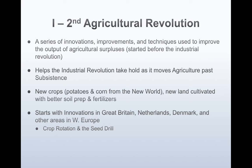New crops — potatoes and corn from the new world — and new land was cultivated with better soil prep and fertilizer. What happened specifically is we brought potatoes over to parts of Europe, and land that was previously considered marginal and land that we couldn't grow on all of a sudden could be cultivated. So more land is being cultivated, meaning there's more food and fewer people need to be farmers.